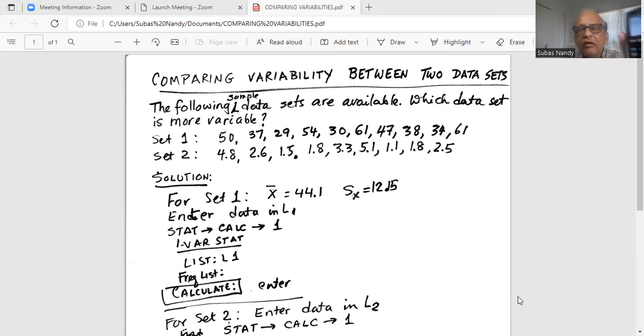Okay. The first list should be L1, second and one. First line list is L1. Then do not enter anything in the second line. Keep it empty and go to calculate. Bring the cursor down and calculate the last line and hit enter.